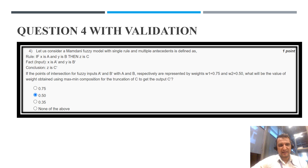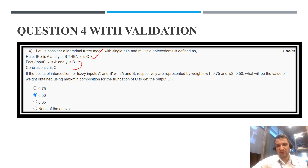Question 4: if X is A and Y is B then Z is C — this is single rule but multiple antecedent. The input is X is A' and Y is B', and we have to calculate the weight. There are two weights, W1 and W2 given.